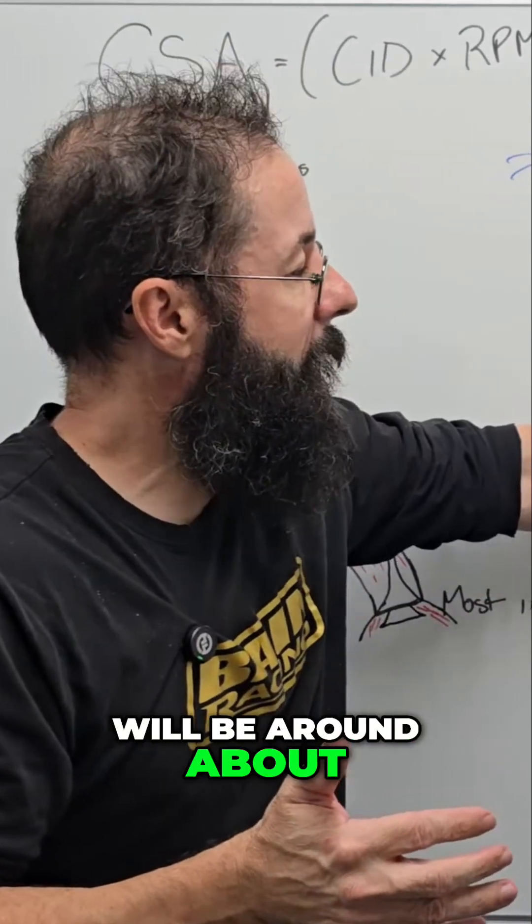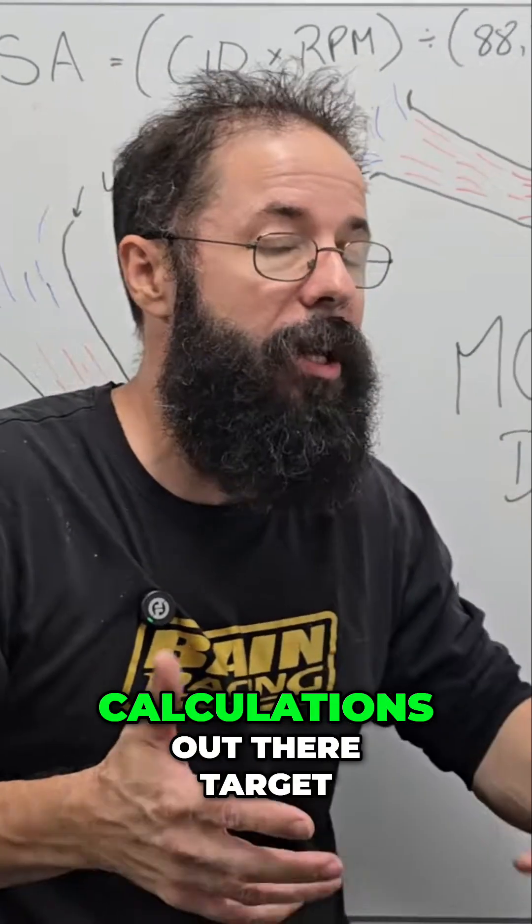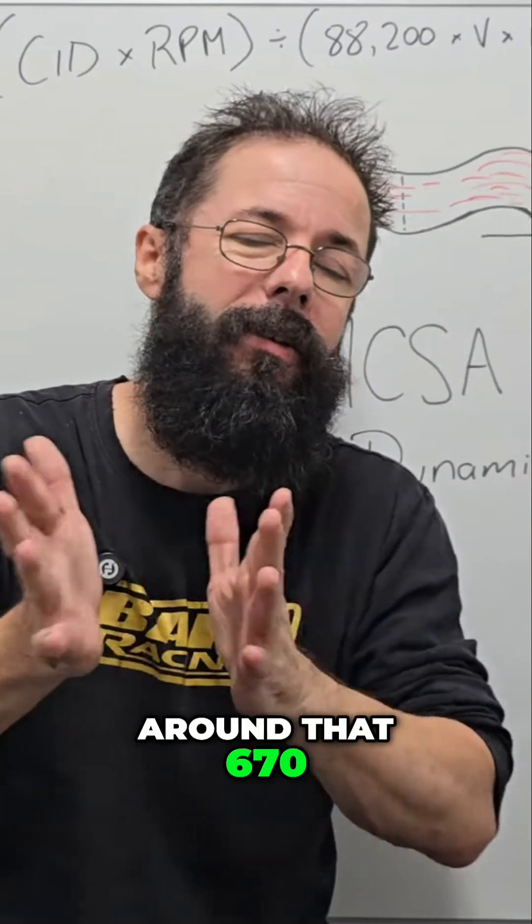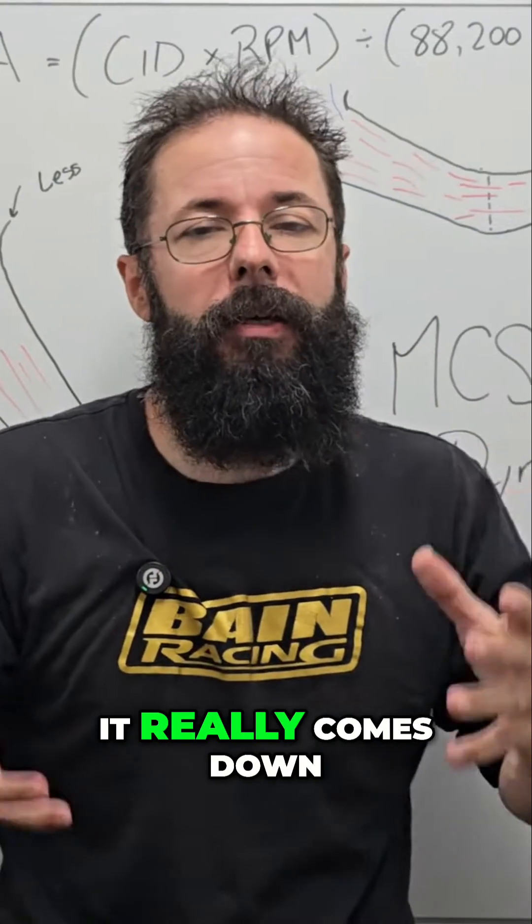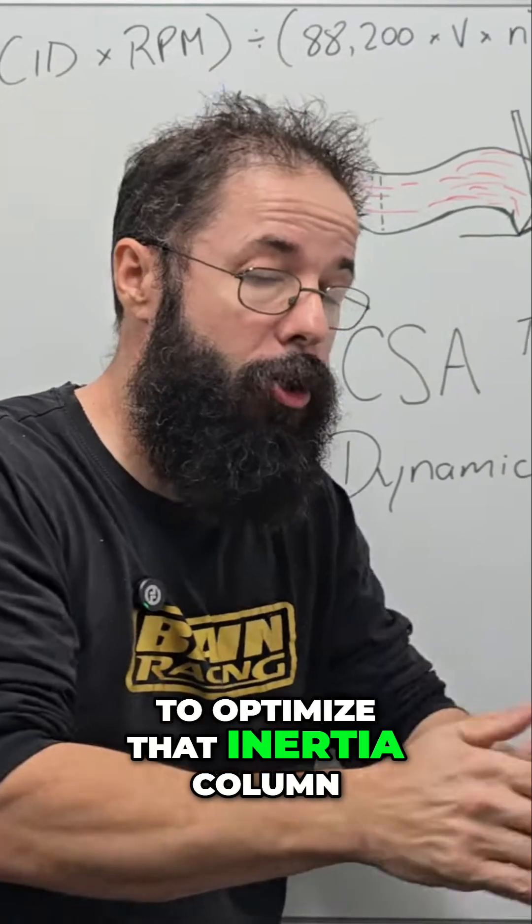We'll be around about 640 to 700 feet per second. A lot of the calculations out there target around that 670. Again, it really comes down to what you're doing. But obviously the key is to optimize that inertia column.